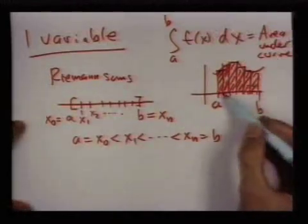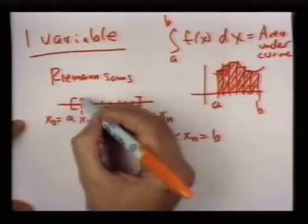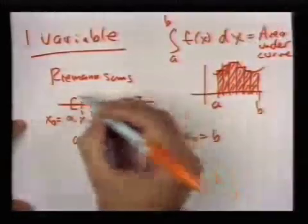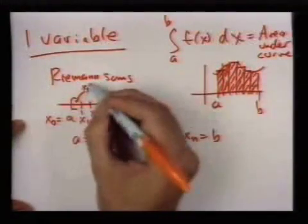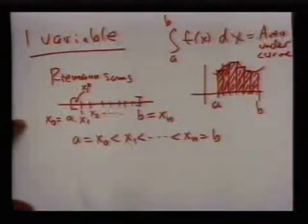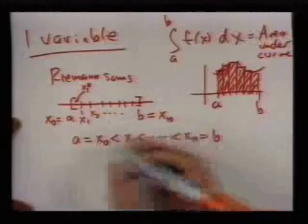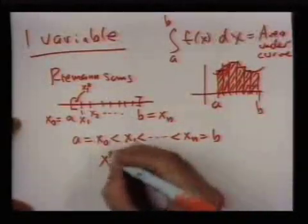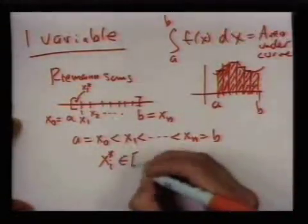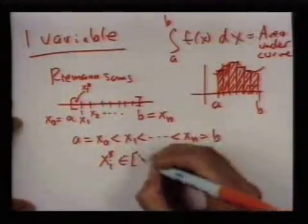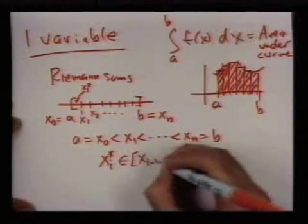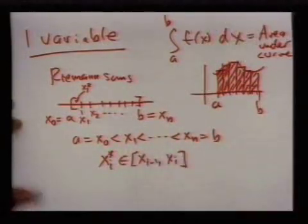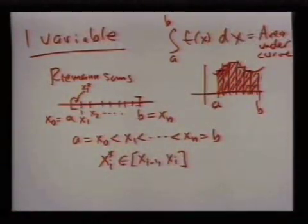More precisely, I said, well, we pick points in each of these intervals, so I'll pick a point x1 star in between x0 and x1, and generically, I pick a point xi star in the interval that goes from xi minus 1 to xi, so this is a so-called sample point.